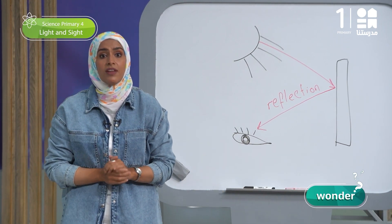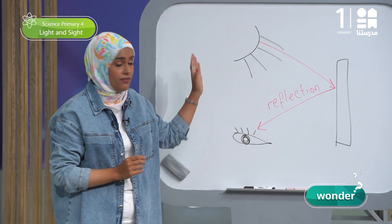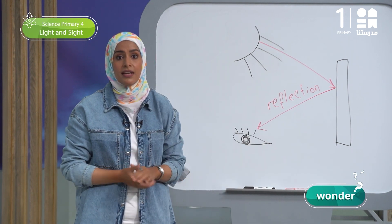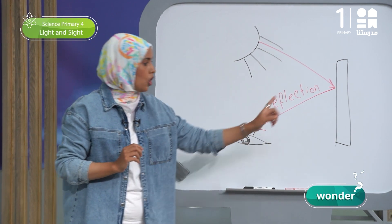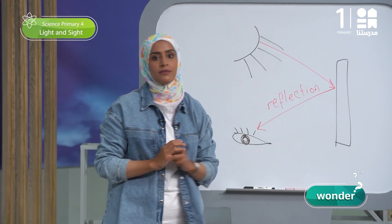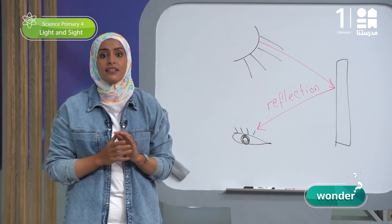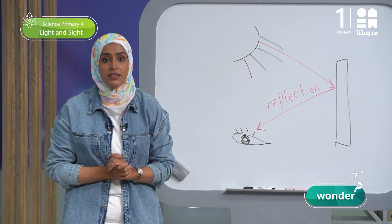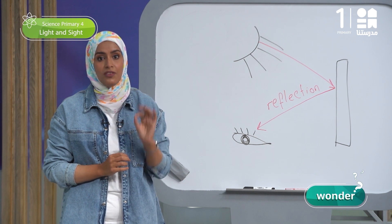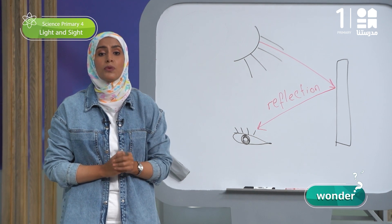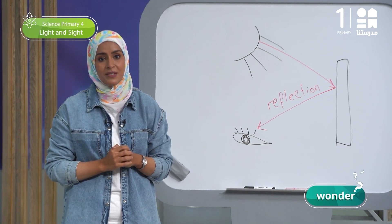Reflection of light occurs when the beam of light travels in a specific direction and strikes an object, then it changes its direction. This is one of the behaviors of light that we will learn more about as we study the concept.